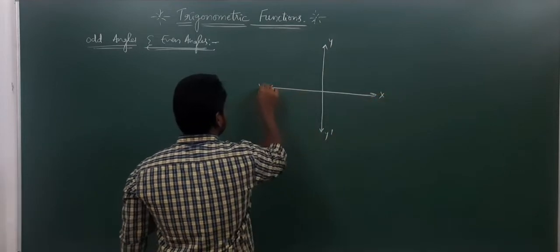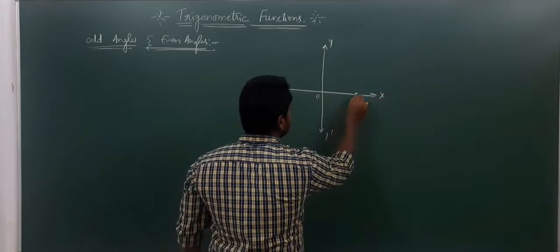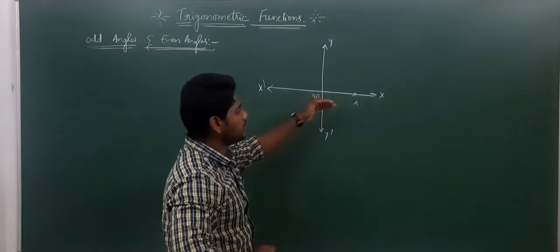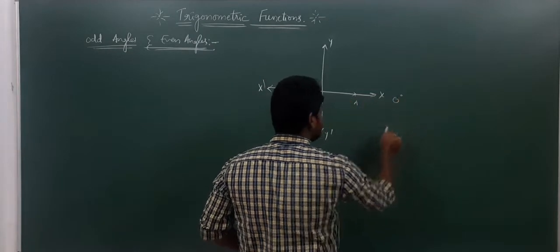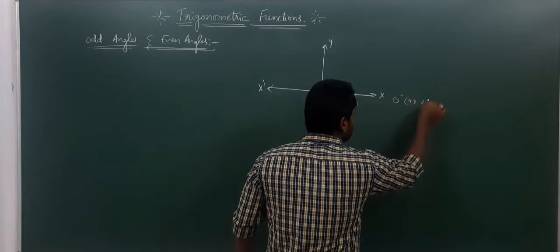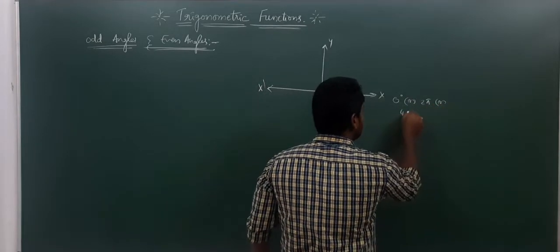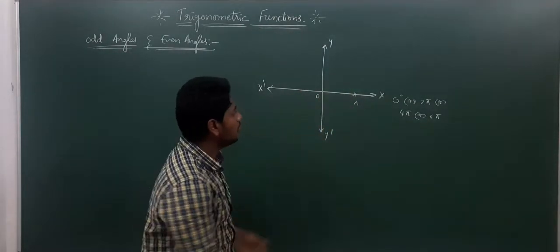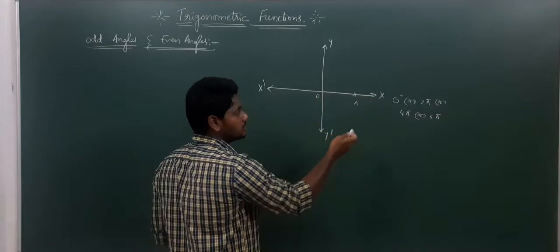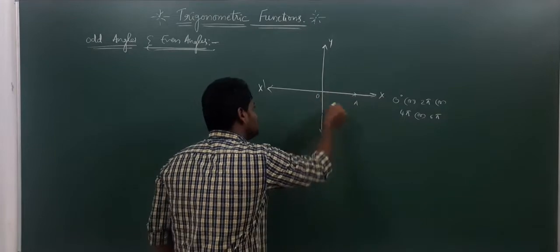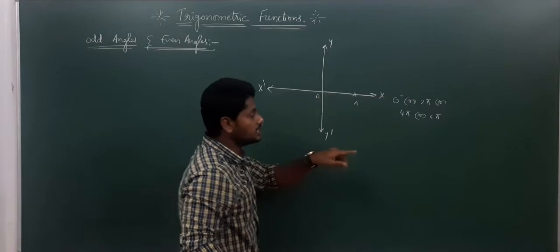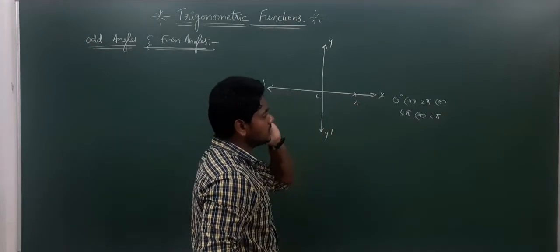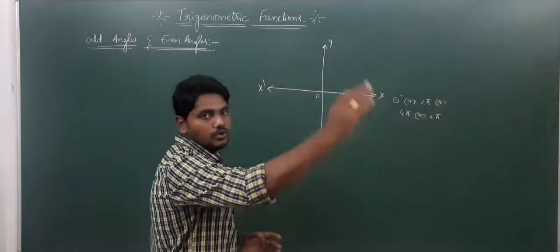Consider a coordinate system with x-axis and y-axis. If the ray OA is on the positive x-axis, the angle can be 0 degrees, or 2π, or 4π, or 6π, and so on. If it makes one revolution it remains on the same positive x-axis, so 360 degrees is 2π; two revolutions give 4π; three give 6π, and so on.